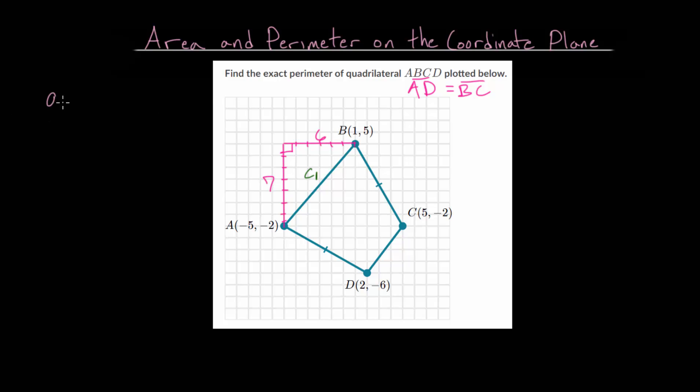And remember, our Pythagorean theorem is just that a squared plus b squared is c squared for some right triangle where a and b are the legs and c is the hypotenuse. So setting up this relationship, we have that 6 squared plus 7 squared is equal to c sub 1 squared.